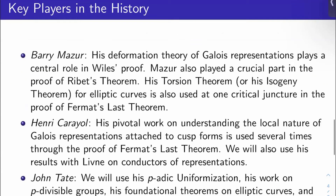Now let's look at some of the key players who were instrumental — not necessarily in the direct flow of the proof, although some of them were — but who proved various crucial theorems needed for the proof of Fermat's last theorem and developed a lot of crucial theory needed throughout the proof. First we have Barry Mazur. His deformation theory of Galois representations will play a huge central role in Wiles' proof. Mazur also plays a crucial part in the proof of Ribet's theorem, and we also use Mazur's torsion theorem and/or his isogeny theorem for elliptic curves at one critical juncture in the proof.